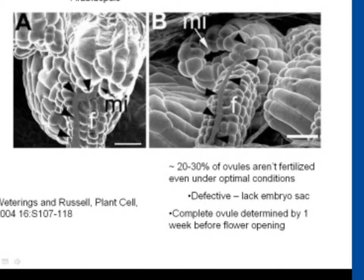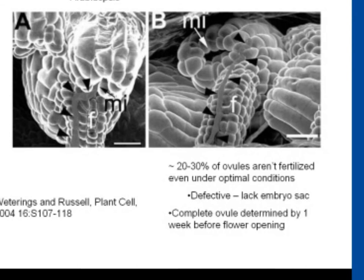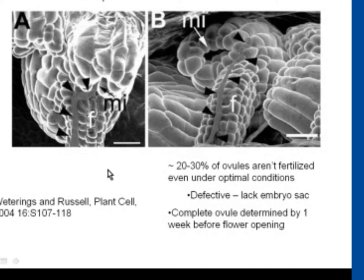If a seed has already been fertilized, the pollen tube won't even grow down that little stalk — it'll carry on and go right by. If there's something wrong with the ovule, the pollen tube won't get any signal and will grow right on past. About 20% to 30% of the ovules aren't fertilized even under optimal conditions. Some studies have found a lot of defective embryos that lack all the constituents or lack the embryo sac completely. So canola isn't perfect in setting all their ovules up from the start, but they certainly have a lot of extra capacity to compensate.